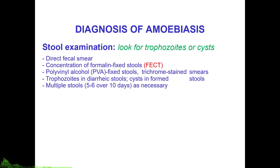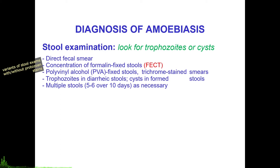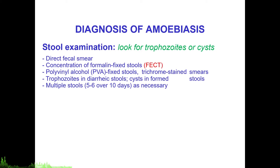The diagnosis of amoebiasis heavily relies on good history and physical examination as well as proper laboratory techniques. Visualization of the Entamoeba histolytica trophozoite or cyst is important for confirmation. This can be done using direct fecal smear, concentration formalin-ether technique, polyvinyl alcohol-fixed stools, or trichrome-stained smears, looking for live trophozoites in diarrheic stools or cysts in formed stools. You may need to sample the stool multiple times, as it can be very difficult to identify Entamoeba histolytica under traditional microscopy.